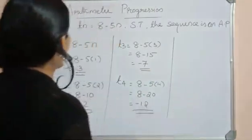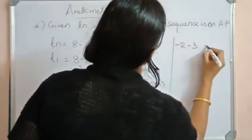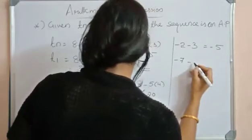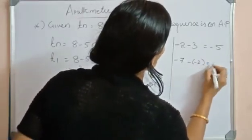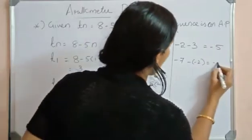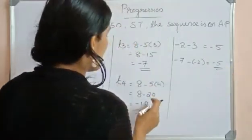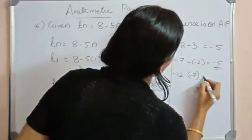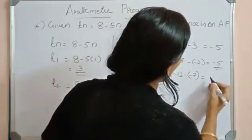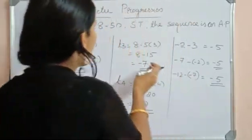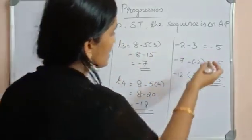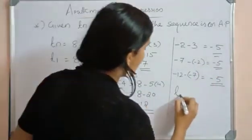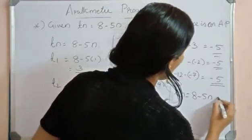Finding the differences: T2 − T1 = −2 − 3 = −5; T3 − T2 = −7 − (−2) = −5; T4 − T3 = −12 − (−7) = −5. The difference between consecutive terms remains constant at −5 in all cases. Therefore, Tn = 8 − 5n is an AP.